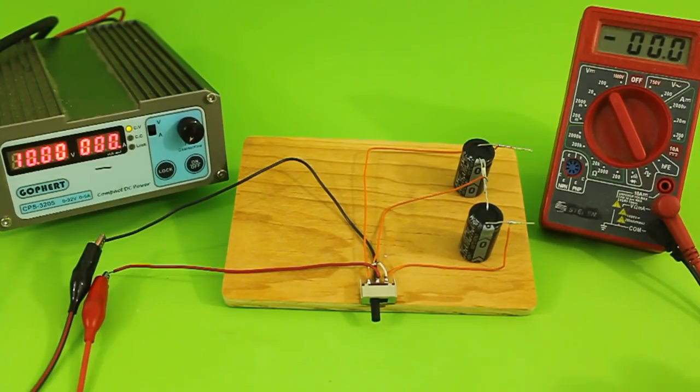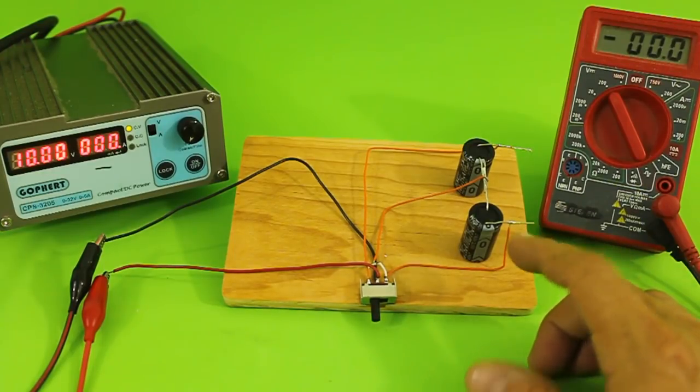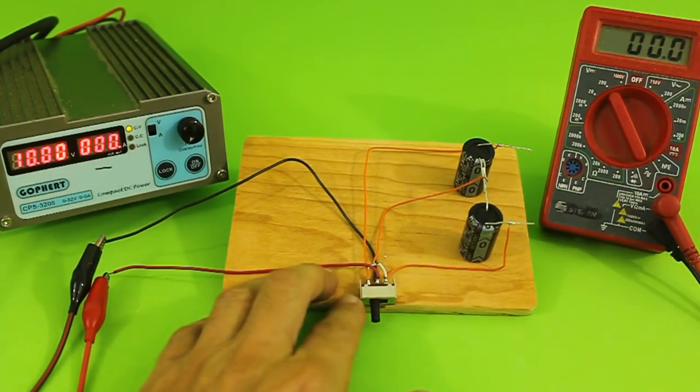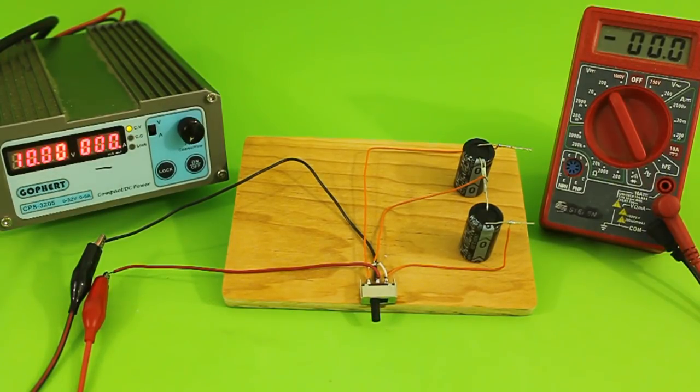Of course, when you connect a load to the circuit, one of the capacitors will discharge. So, we have to continually move the switch from a position to the other in order to charge both capacitors.